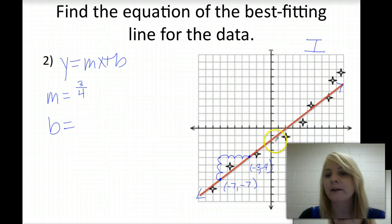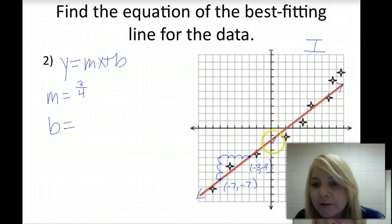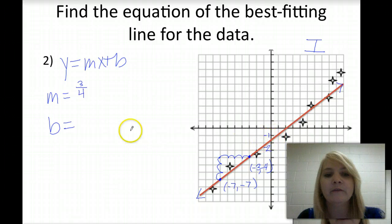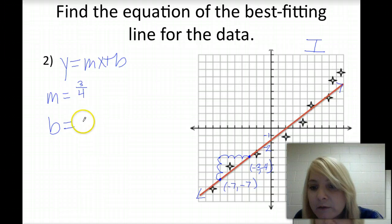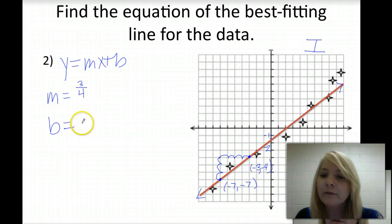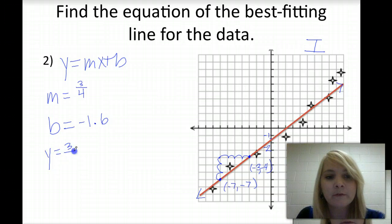And our y-intercept is the point where our line crosses the y-axis. Here, if we notice, it's not on the exact grid. It's somewhere in between negative 1 and negative 2. It's closer to negative 2 than it is to negative 1. So we're going to approximate here. This slope falls about a little more closer to negative 2 than halfway. So we're going to approximate that to be around negative 1.6. So the equation of our line is y equals 3 fourths x minus 1.6. To write that as a decimal, we'll have y equals 0.75x minus 1.6.